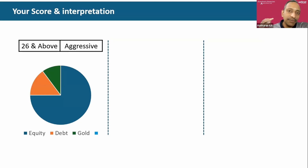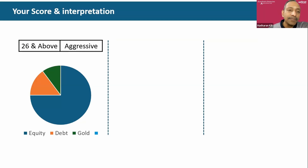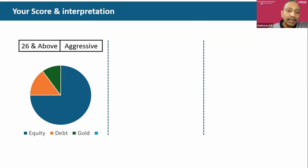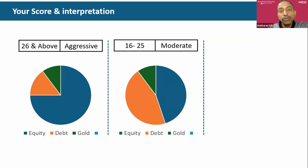If you are an aggressive investor in terms of your risk appetite, you can take a substantially big exposure to equity. As shown in this graph, it is 75% exposure to equity, 15% exposure to debt, and 10% exposure to gold.